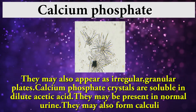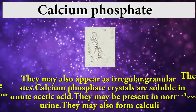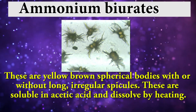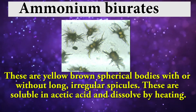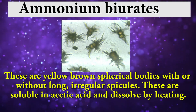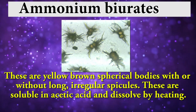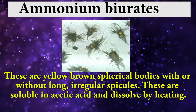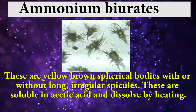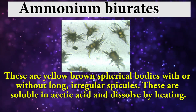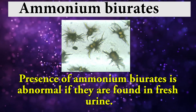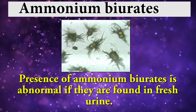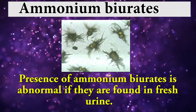Calcium phosphate crystals may also form calculi. Ammonium biurates: these are yellow-brown spherical bodies with or without long, irregular spicules. These are soluble in acetic acid and dissolved by heating. The presence of ammonium biurates is abnormal if they are found in fresh urine.